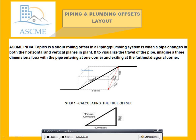The topic is the rolling offset in a piping and plumbing system, which is when a pipe changes in both the horizontal and vertical plane. To visualize this, the image is a box with a pipe entering at one of the corners and exiting at the fourth diagonal corner.